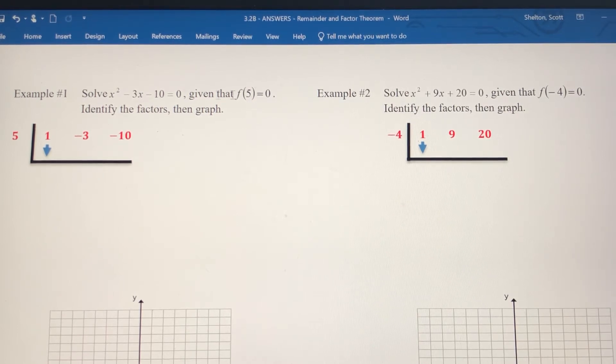So we want to take our zero and do synthetic division. Coefficient of x squared is 1, coefficient of x is negative 3, and the constant is negative 10.